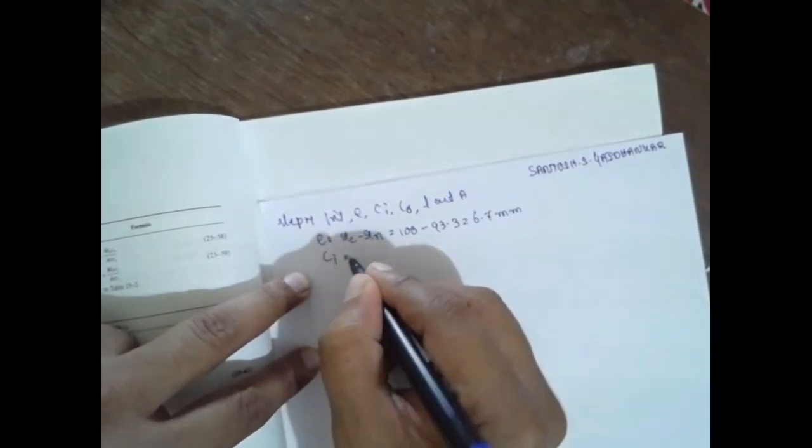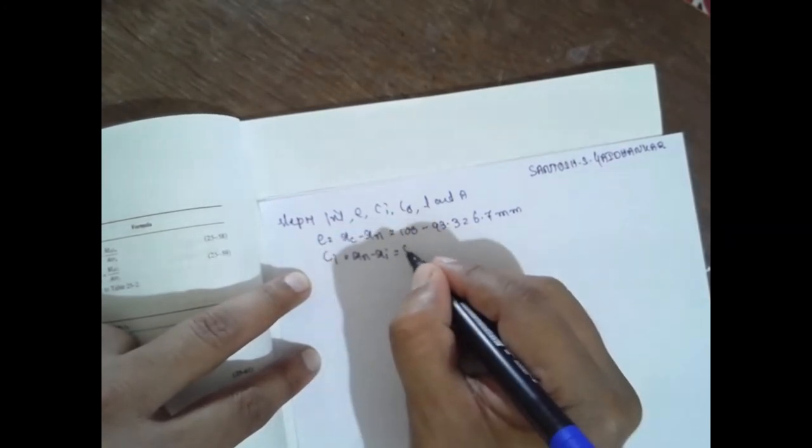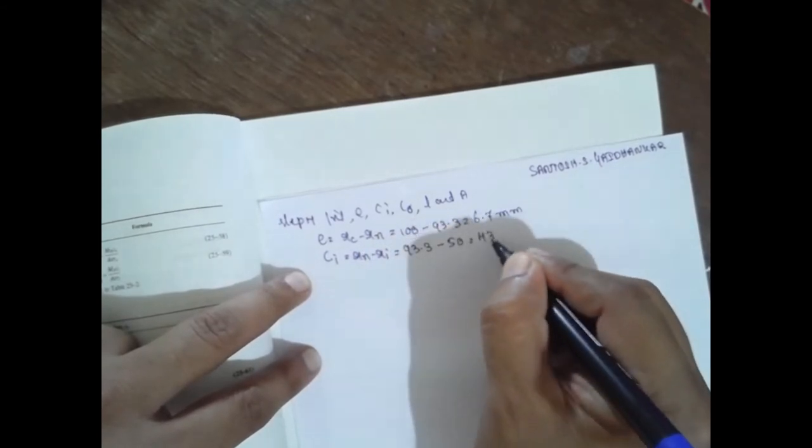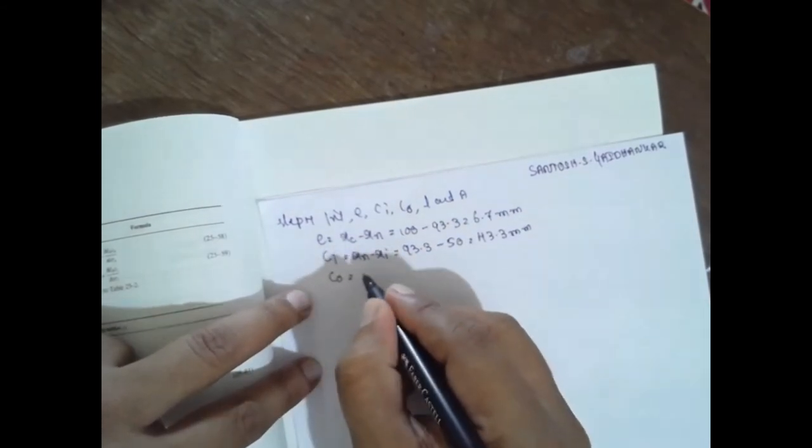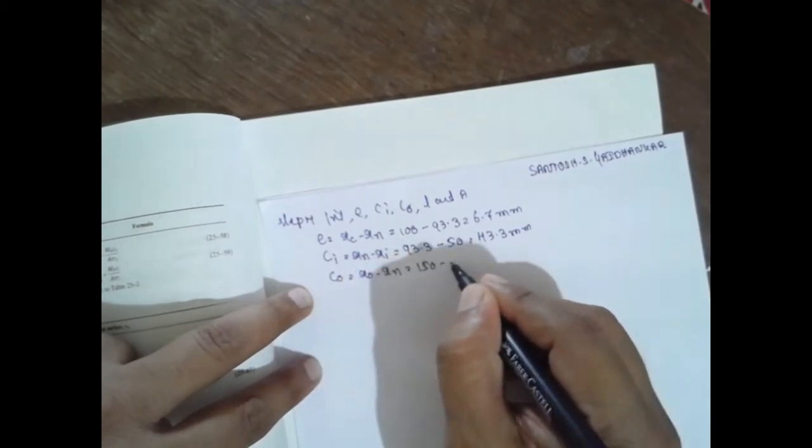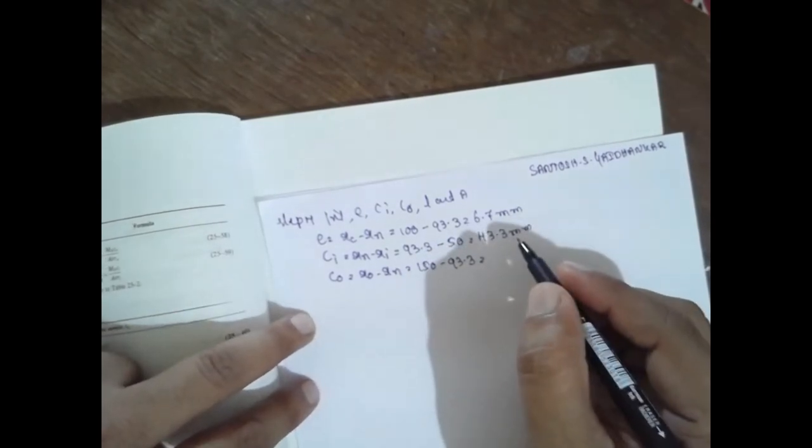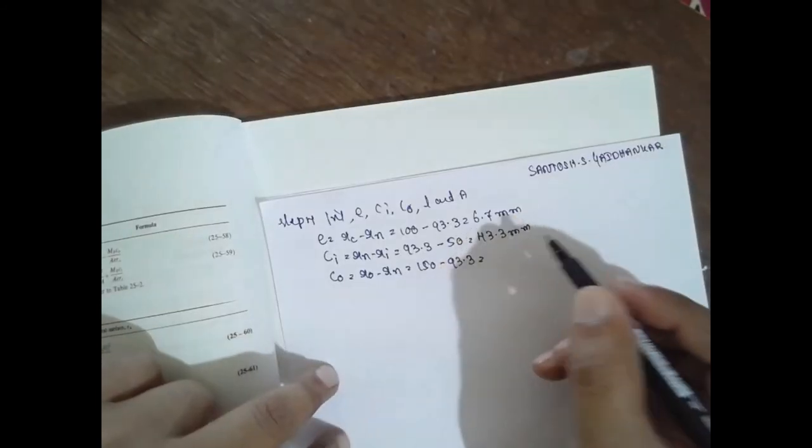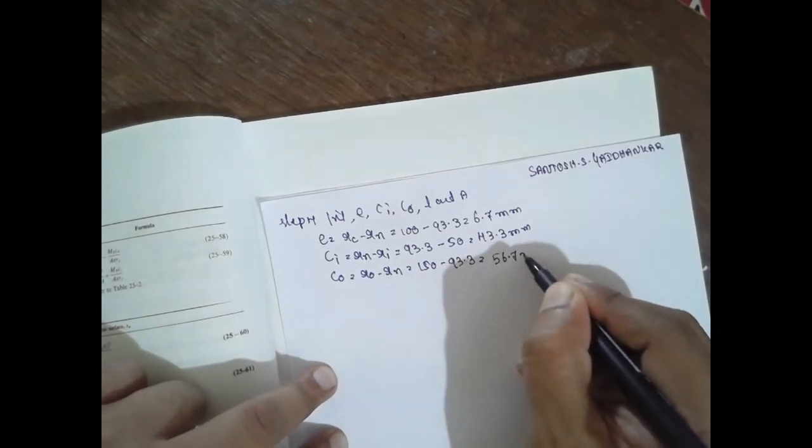Next is ci. ci is nothing but rn minus ri. rn is 93.3 minus 50. You will get 43.3 mm. He will get 64.7 mm.